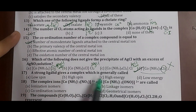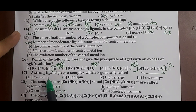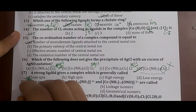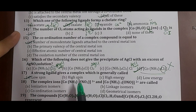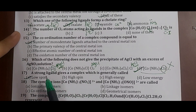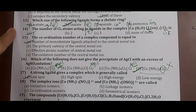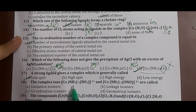Question 17: a strong ligand gives a complex which is generally called? If it is a strong ligand, pairing of electrons occurs and it forms a low spin complex. Correct answer: option A, low spin complex. For a weak field ligand, it forms a high spin complex.